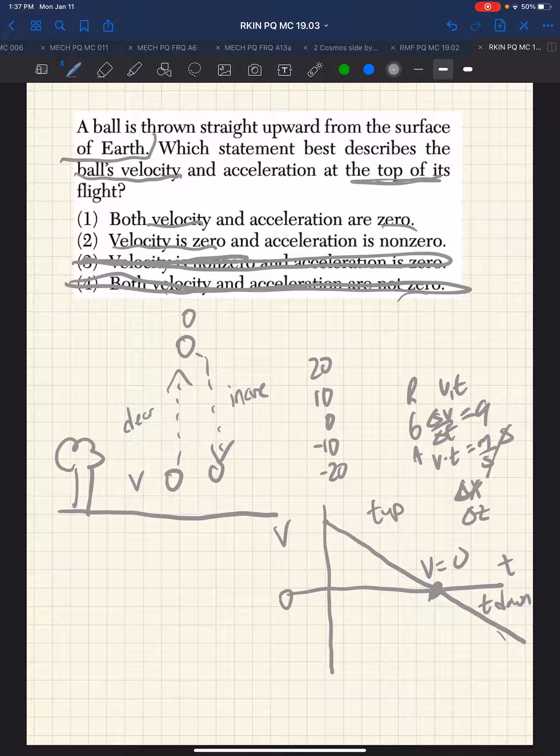What about the acceleration? Well, the acceleration, we said, is the slope. And the slope of this thing is a straight line. Every second, it decreases by 10. So the slope is also constant, but it's definitely not zero. The acceleration is minus 10 the entire time. And we can see that in the graph - the slope is a constant minus 10.